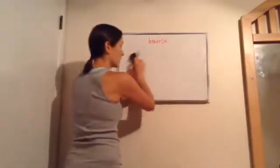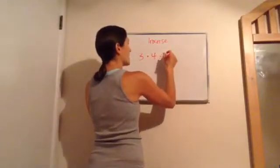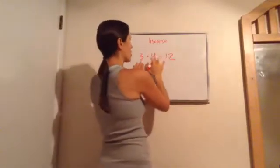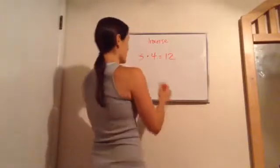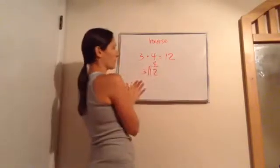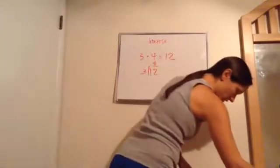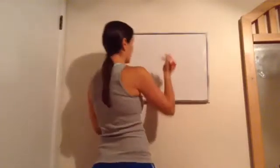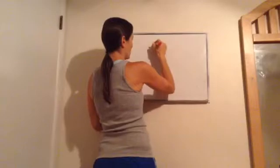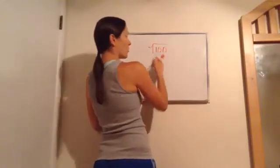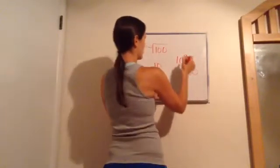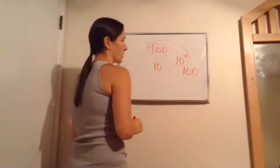Let's try multiplication. 3 times 4 is 12. What's the inverse of that? The opposite of multiplication is division. What would undo it? 12 divided by 3 would be 4. That's an inverse operation. And you can even do it with square roots — it doesn't really teach in this lesson, but it's important to mention. For example, the square root of 100 is 10. What's the opposite of square root? Squaring a number. 10 squared is 100. These are inverse operations.